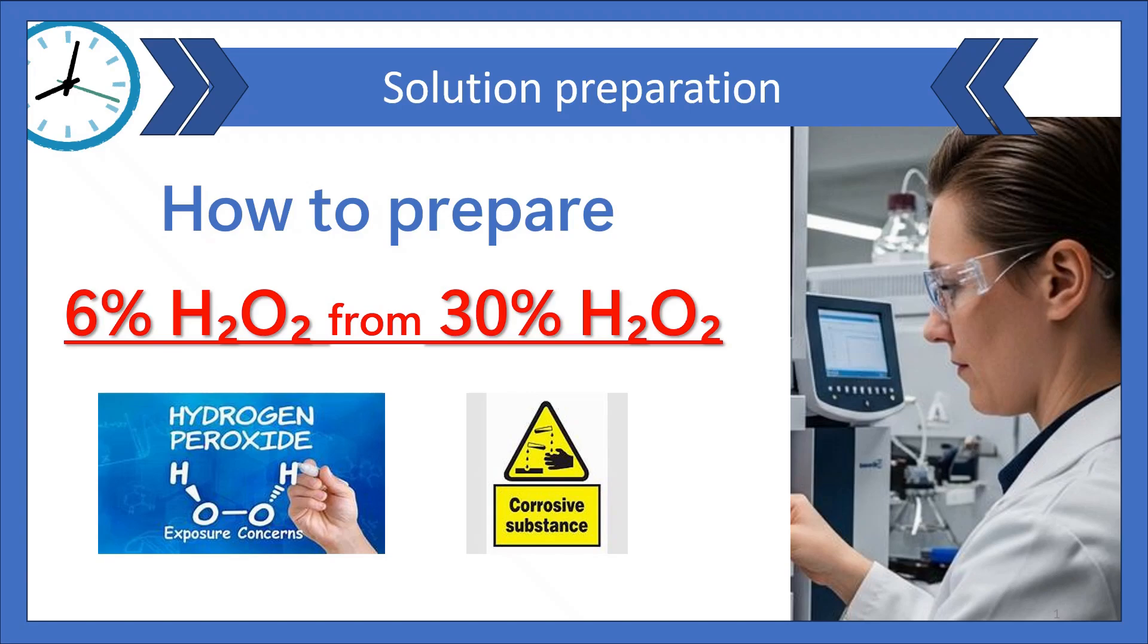Hello everyone, welcome to Pharmacem Insights. In today's video, we will learn how to prepare a 6% hydrogen peroxide solution from a 30% hydrogen peroxide stock solution. This is a common dilution exercise in analytical chemistry and pharmacy labs. So let's get started.